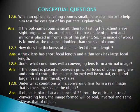Question 12.7: How does the thickness of a lens affect its focal length? The focal length depends on the thickness of the lens. A thicker lens has a shorter focal length — its focal length is reduced. So thickness reduces the focal length; this is how it affects the lens.